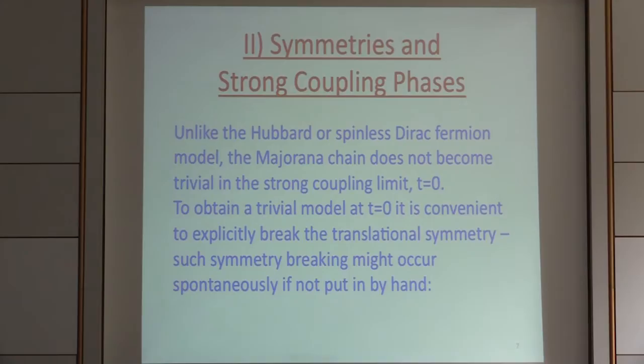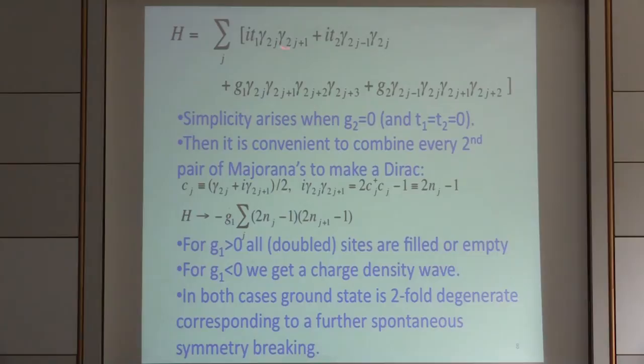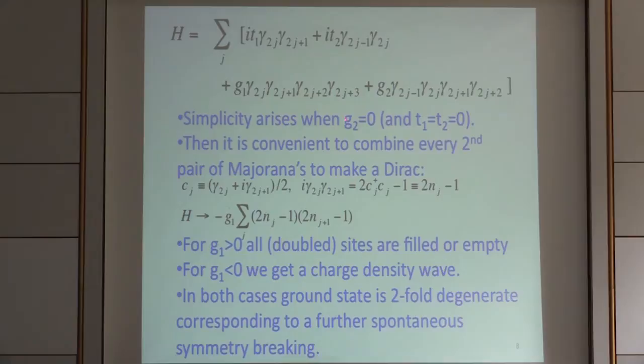To get some insight into what might happen, it's instructive to break the translational symmetry by hand. We can consider a model where the hopping and interaction terms alternate. If we have an even-numbered site on the left-hand end, we have G1; if odd, we have G2. These are nearest-neighbor interactions. To get a model that's easily solvable, I'm going to set three of these parameters to zero and only have one non-zero parameter, namely G1.